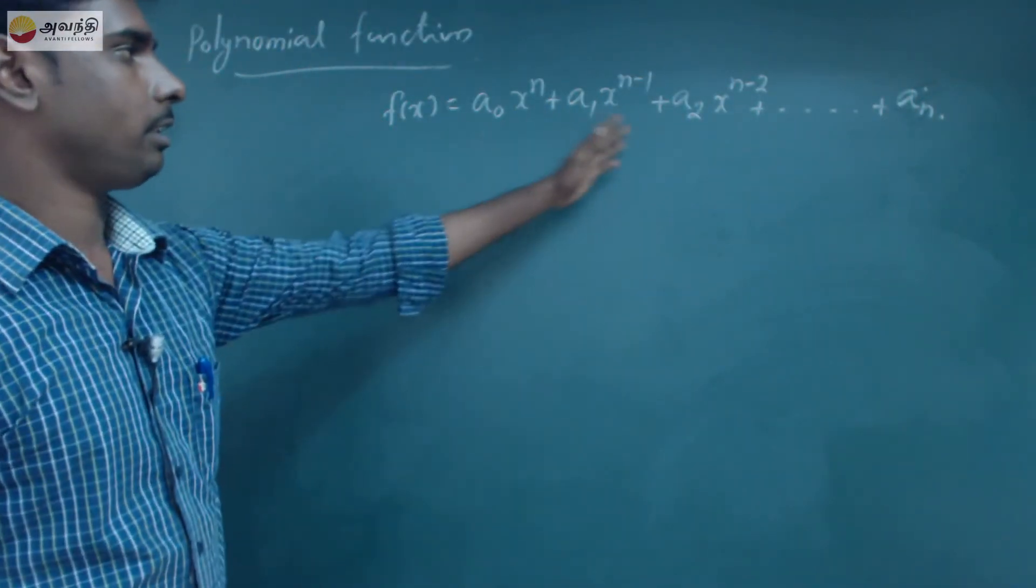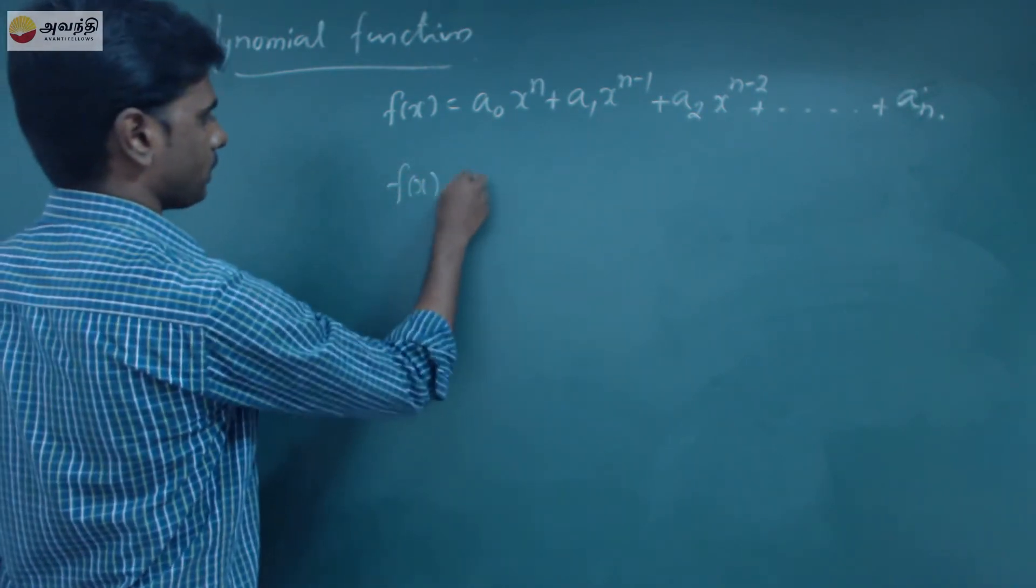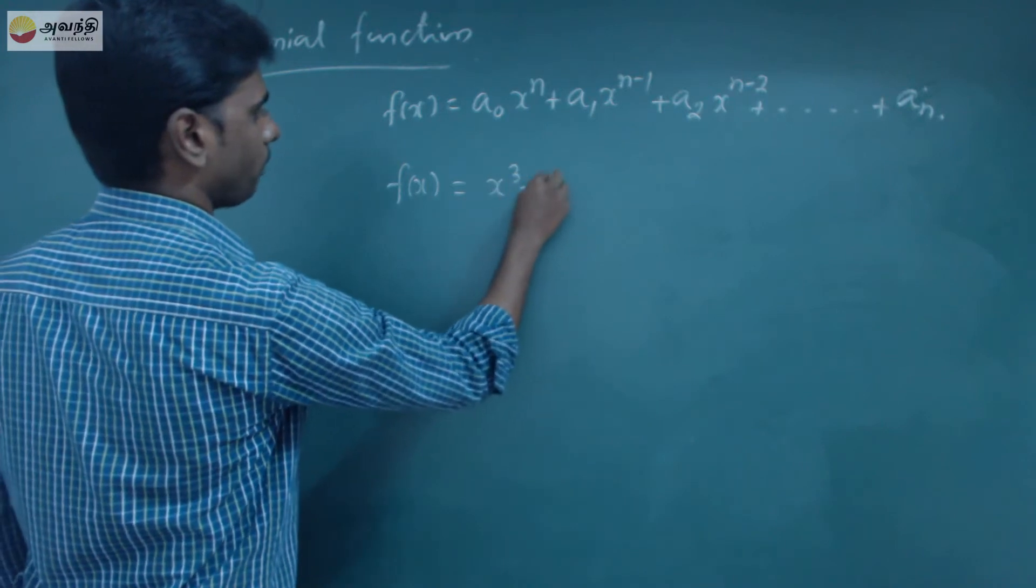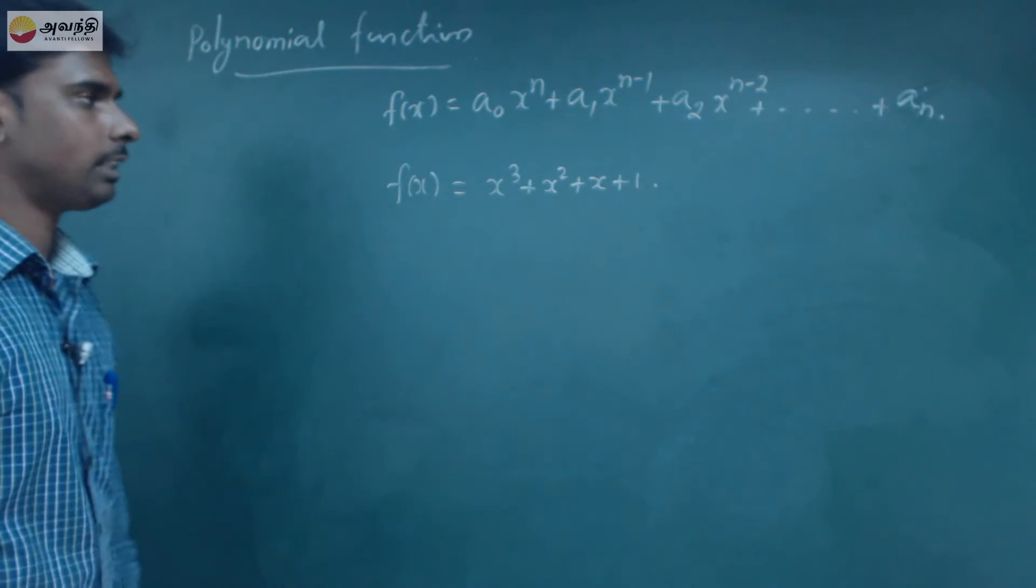Now we have a polynomial function. We have a polynomial function x cube plus x square plus x plus 1. This is third degree polynomial.